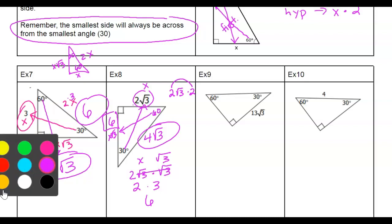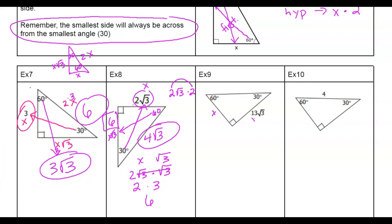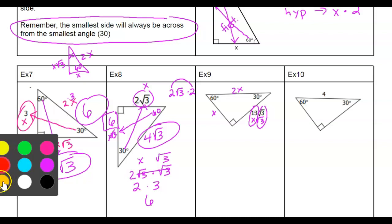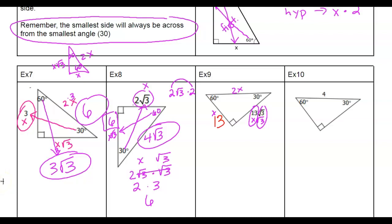Let's look at example nine. Across from the 30 is x, x root 3, and 2x. What I notice is I don't have the side across from the 30 directly, but things match up. I'm given the side across from the 60, which is in the x root 3 spot — so x is 13. That means the side across from 30 is 13, and the hypotenuse is 2 times 13, which is 26.